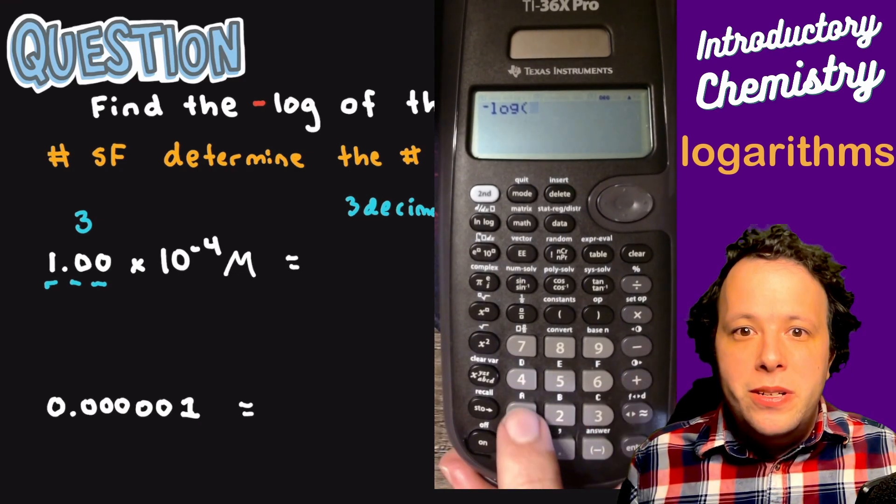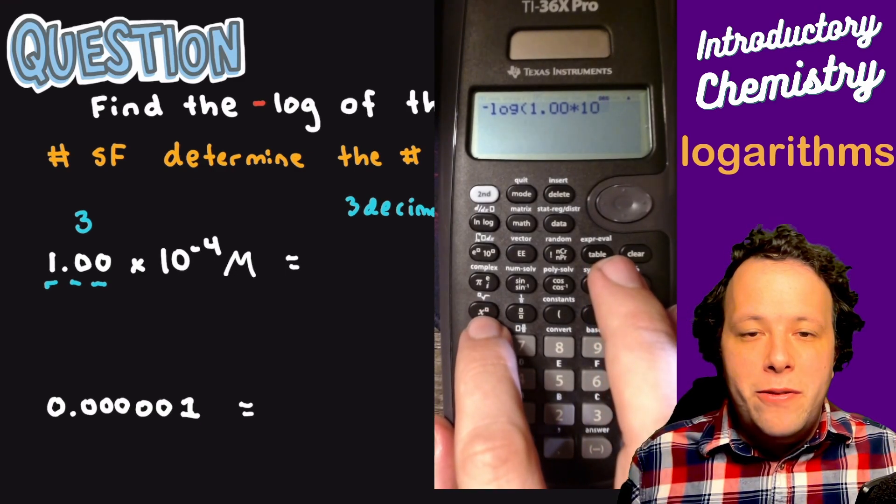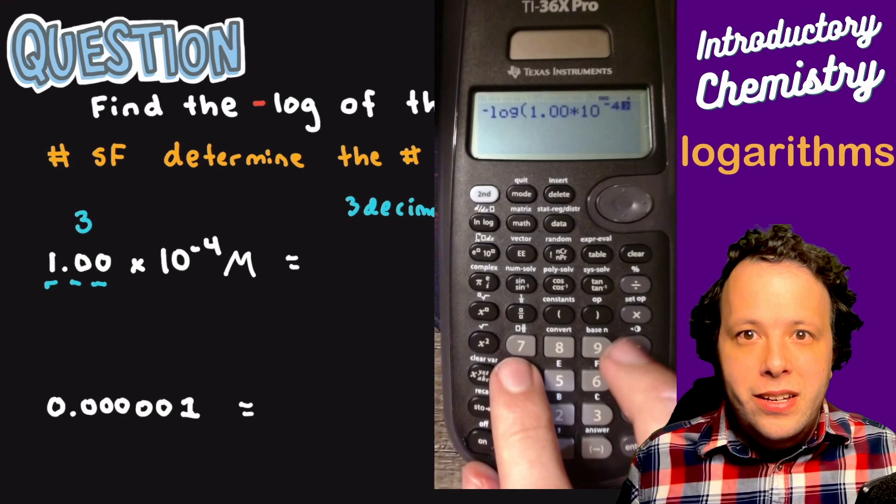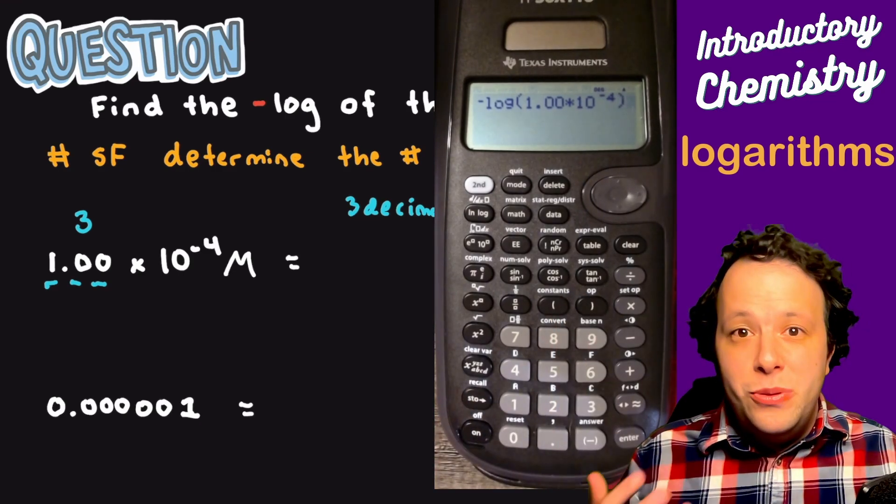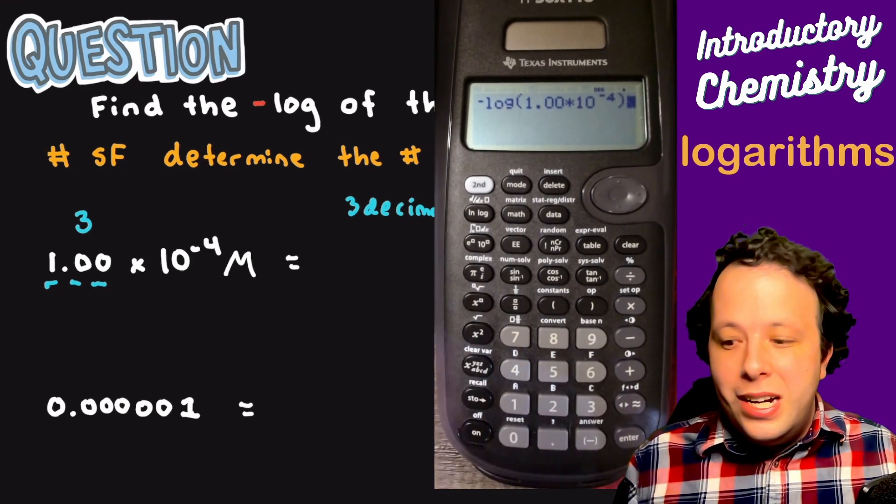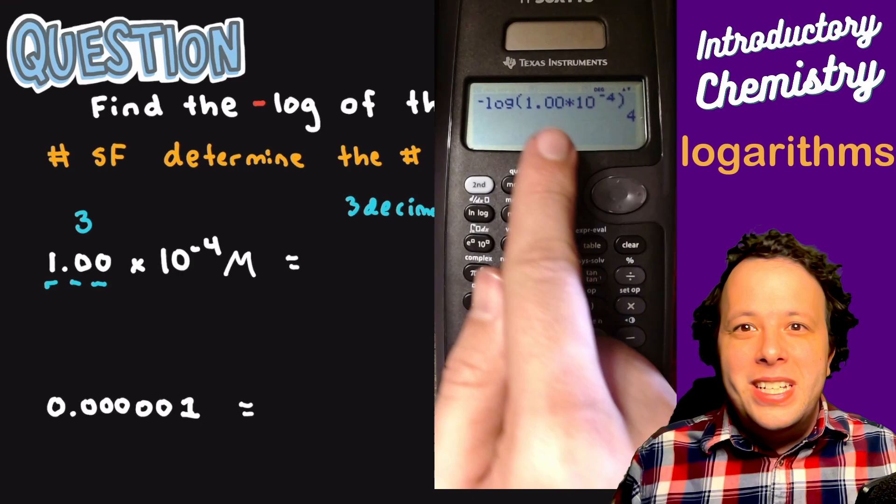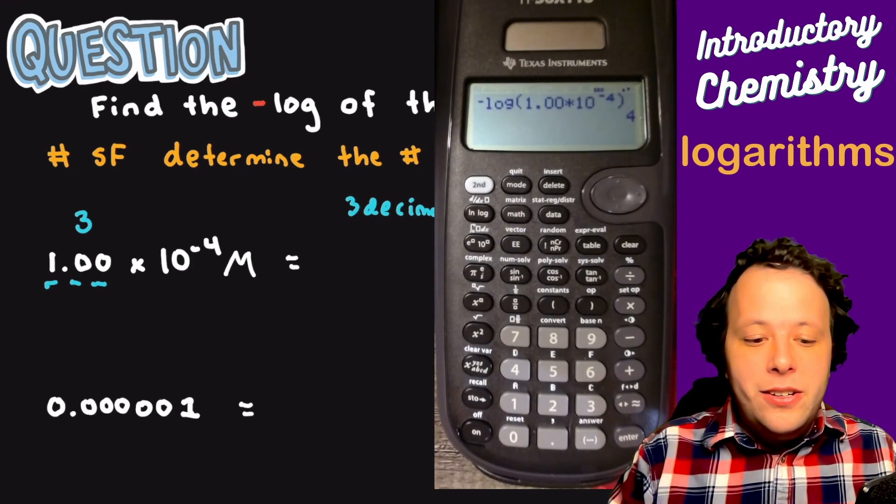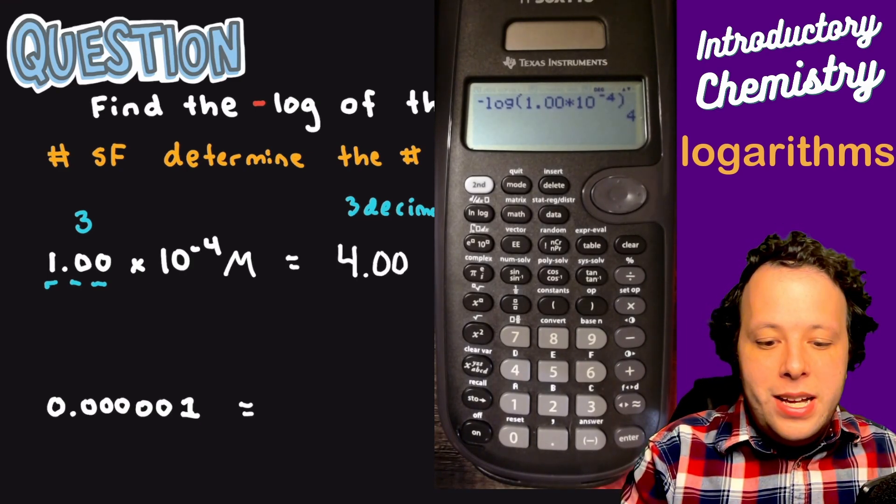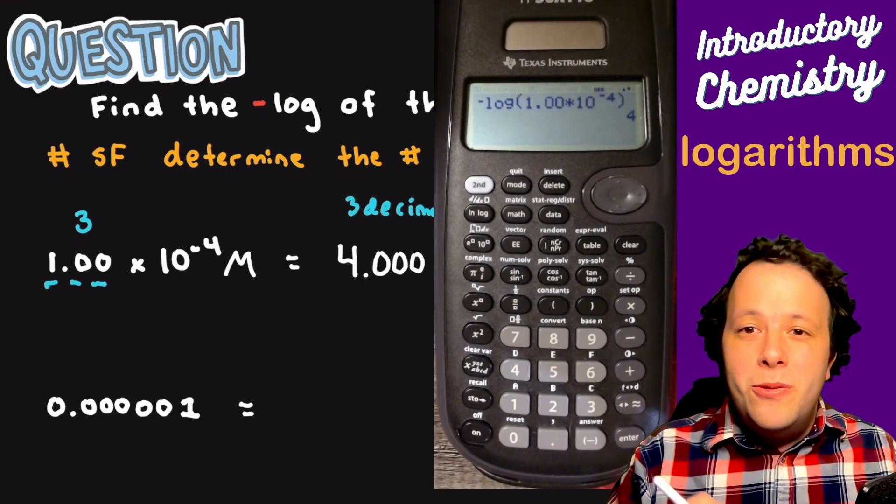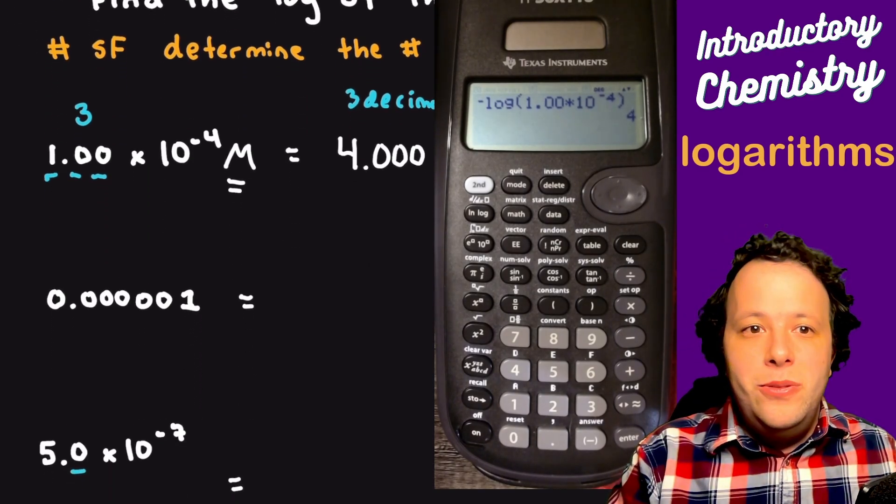Now the whole idea is we're going to plug in our numbers. So we have 1.00, and then we would do times 10, and we're going to raise that using our power function to the negative fourth. We hit negative again, hit four, move our cursor over so we can end the parentheses. You want to use parentheses as much as you can. We see that everything's plugged in. You don't want to blindly start plugging and chugging numbers and not understand them. When we hit equal, we'll get four, which makes sense. We have four and we want three decimals, so it would be 4.000.